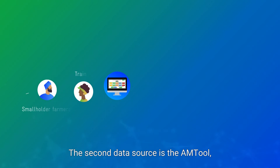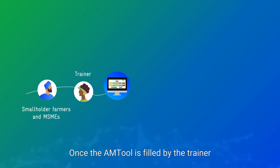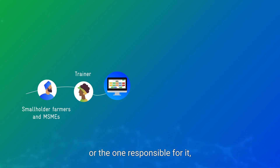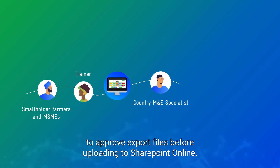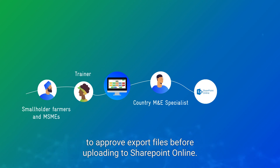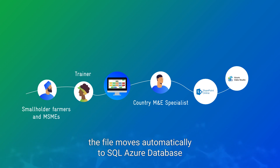The second data source is the AM tool, which documents all trainings in the country packages and participant lists. Once the AM tool is filled by the trainer or the one responsible for it, the country M&E specialist is responsible to approve export files before uploading to SharePoint Online. Once the AM tool export file is uploaded, the file moves automatically to the SQL Azure database.